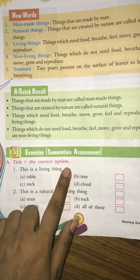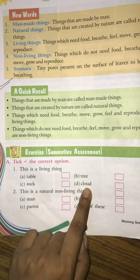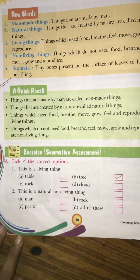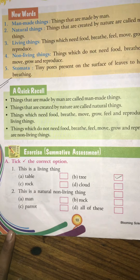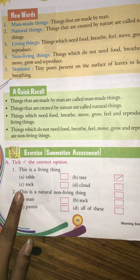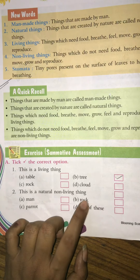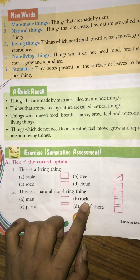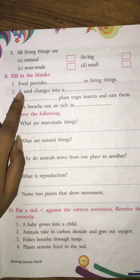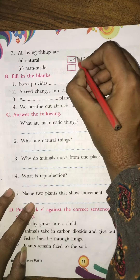Take the correct option. First one: this is a living thing — table, rock, tree, or cloud? Tree is a living thing. Put a tick in front of that word. Next: this is a natural non-living thing. Rock is non-living but created by nature, so rock is the answer. All living things are natural — man-made, big or small? All living things are natural.